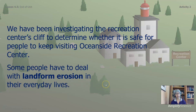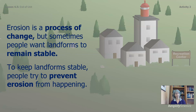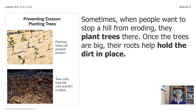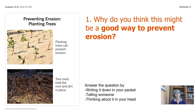Some people have to deal with landform erosion in their everyday lives. Erosion is a process of change, but sometimes people want landforms to remain stable. To keep landforms stable, people try to prevent erosion from happening. Sometimes when people want to stop a hill from eroding, they plant trees there. Once the trees are big, their roots help hold the dirt in place. Why do you think this might be a good way to prevent erosion?